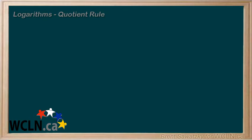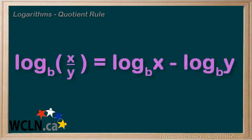You're probably thinking if there's a product rule for converting things back and forth between multiplication and addition using logs, there is probably a quotient rule. You can probably guess that it's for converting things between division and subtraction. Here it is: log base b of x over y equals log base b of x minus log base b of y.